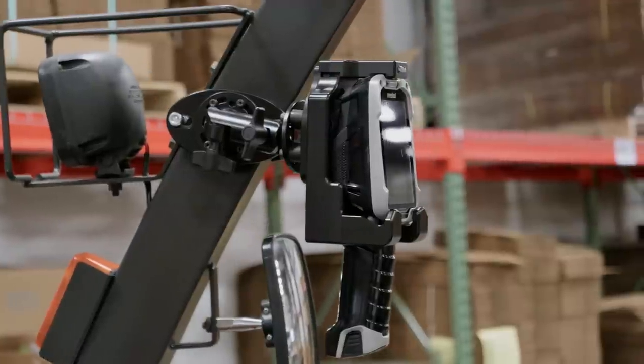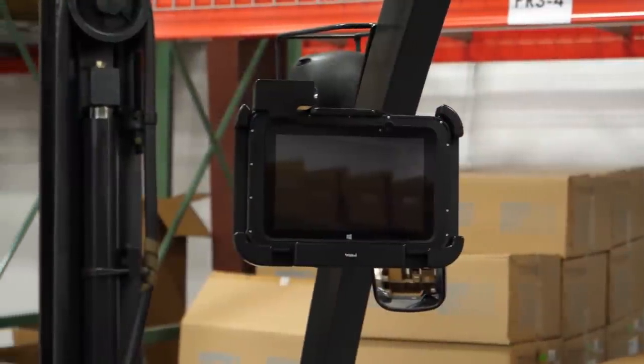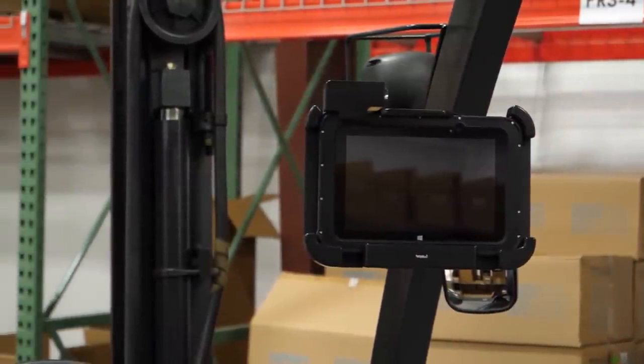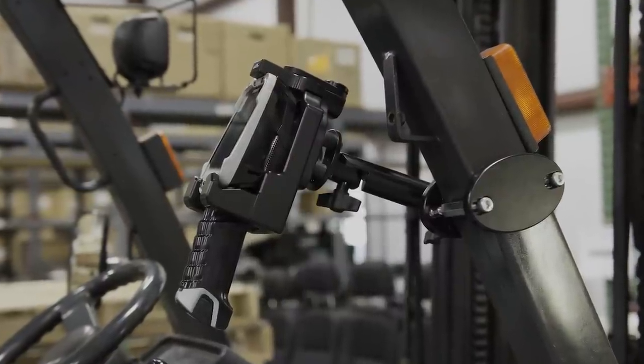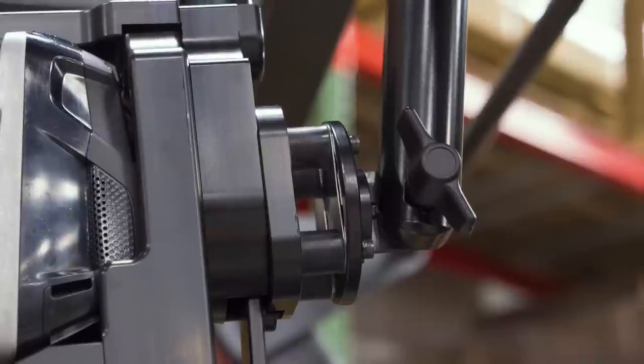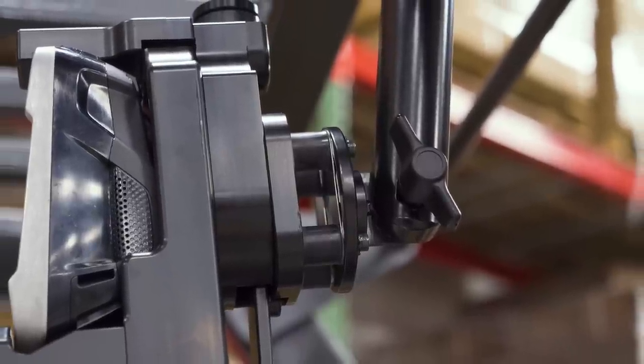ProClip heavy-duty forklift mounts are specifically designed for rugged applications and large devices. They can be used on any flat bar, and the solid aluminum construction with corrosion-resistant coating provides the most durable solution on the market.